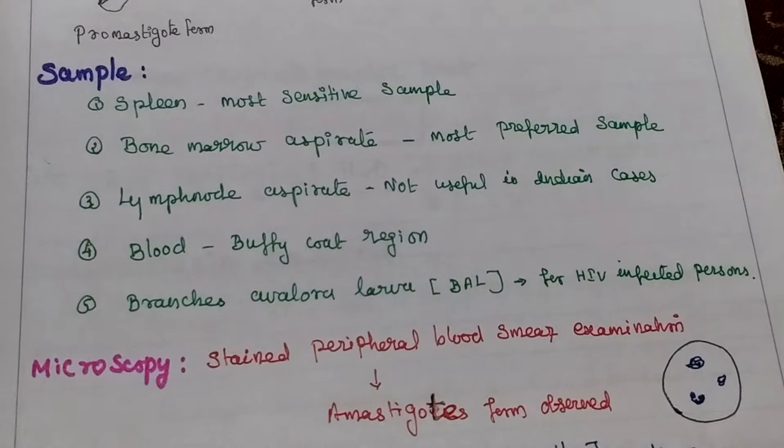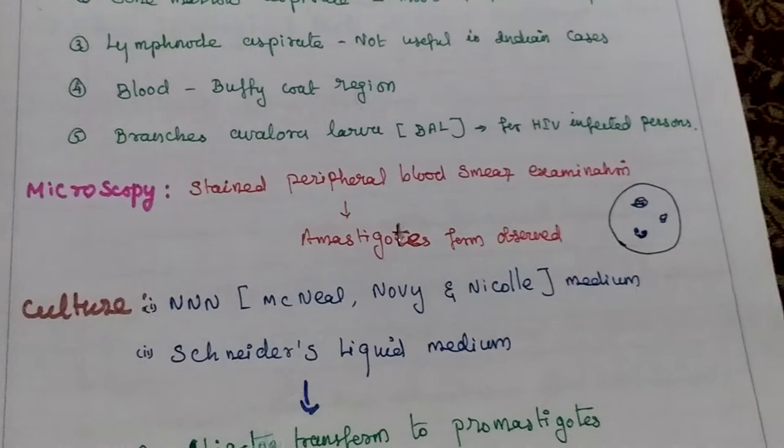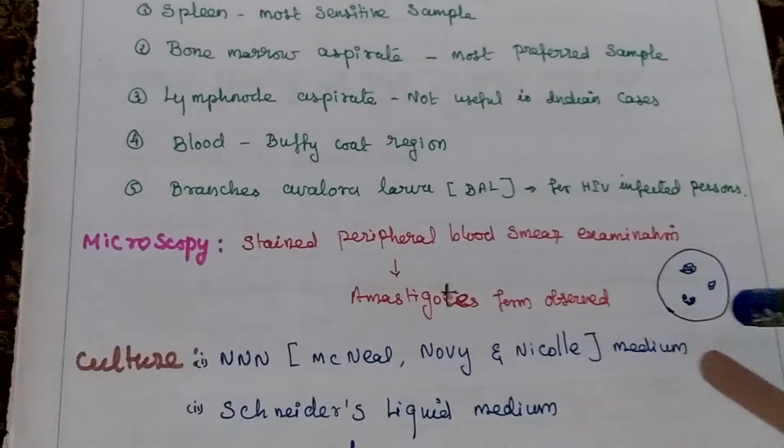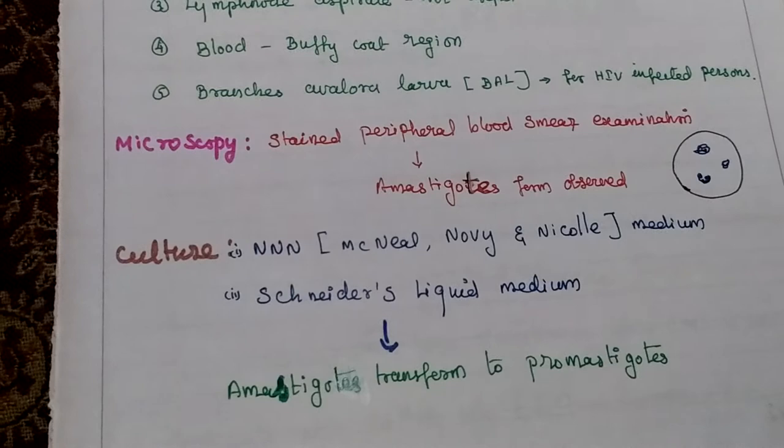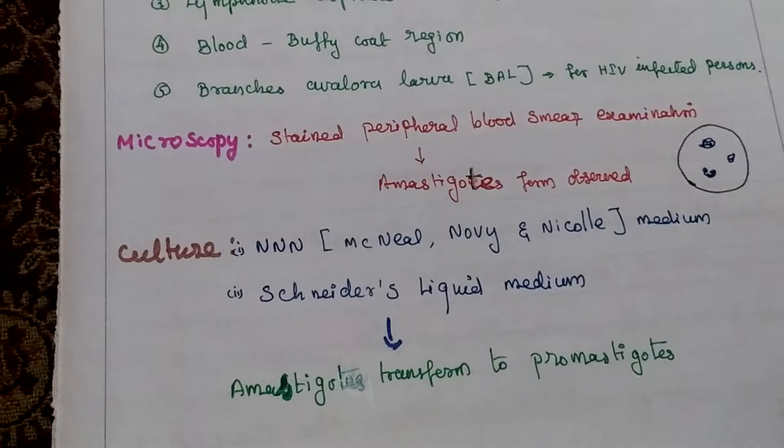For the microscopy test, stained peripheral blood smear examination is done — we observe the amastigote form of the parasite. For culture, two different types of culture media are used: NNN medium and Schneider's liquid medium. In this medium, the amastigote form is converted into the promastigote form.